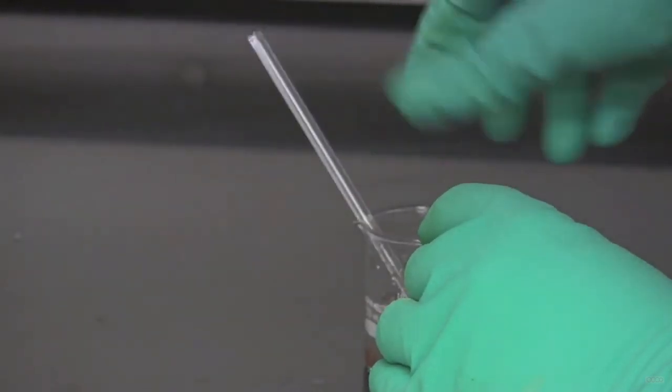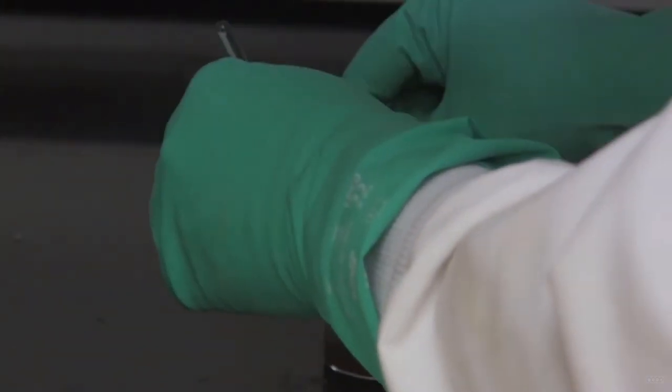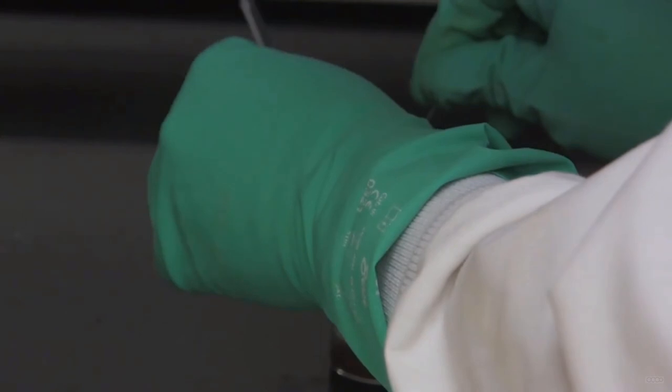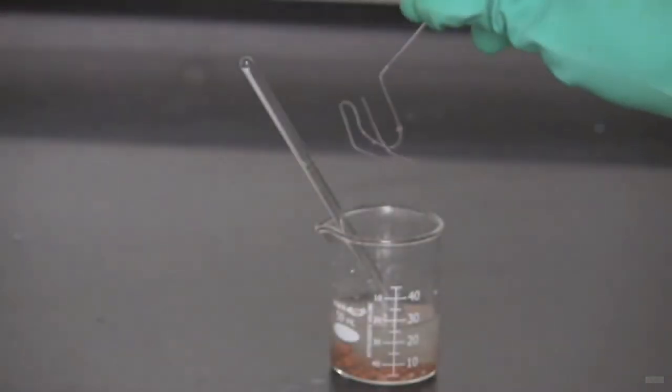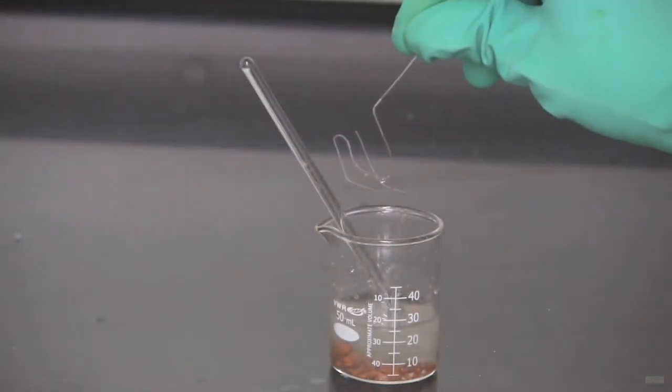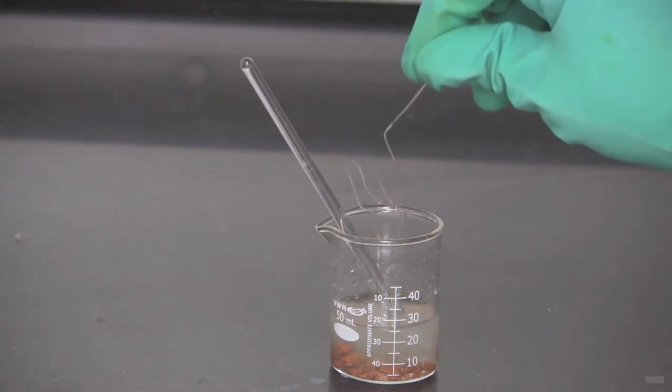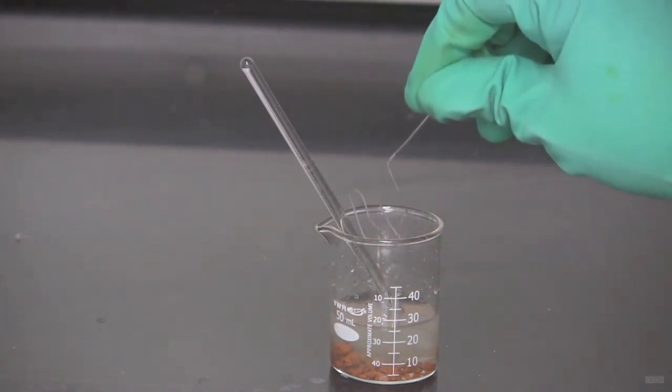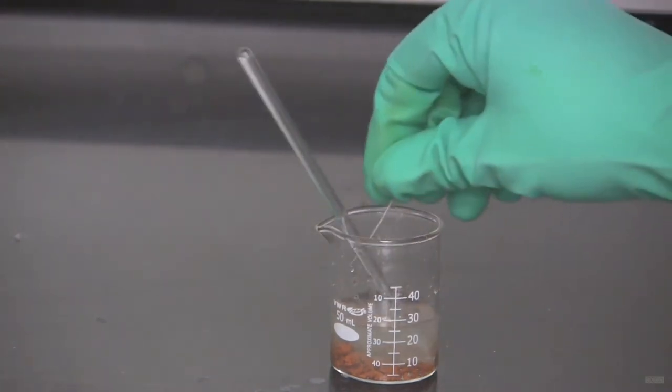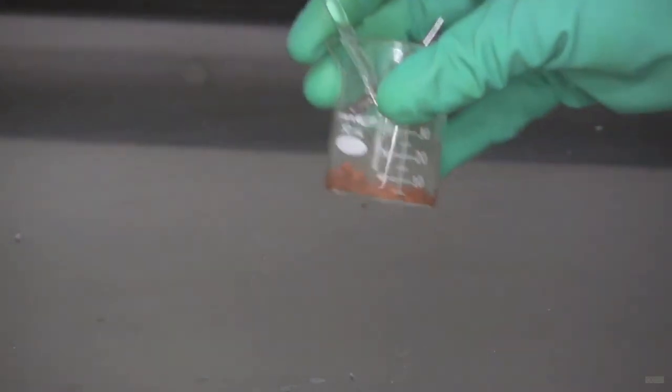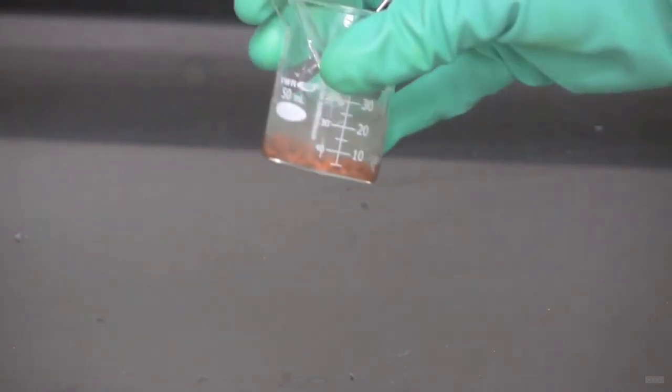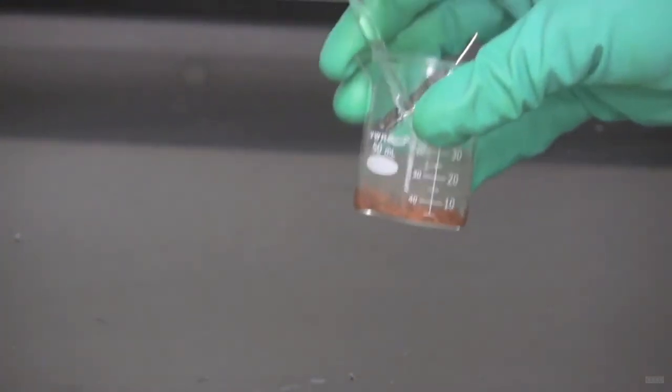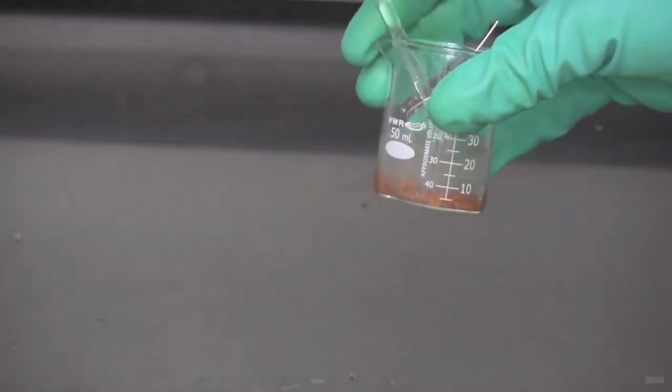So as you can see, with not too much effort, I've managed here to get the copper off the wire. Now if there's any copper that stays on the aluminum wire, you can always add a drop of HCl and that will end up removing it. But what we've got here is this situation. You can see all the copper sitting in the bottom of the beaker there. And now we can move on to the next step of filtering it.